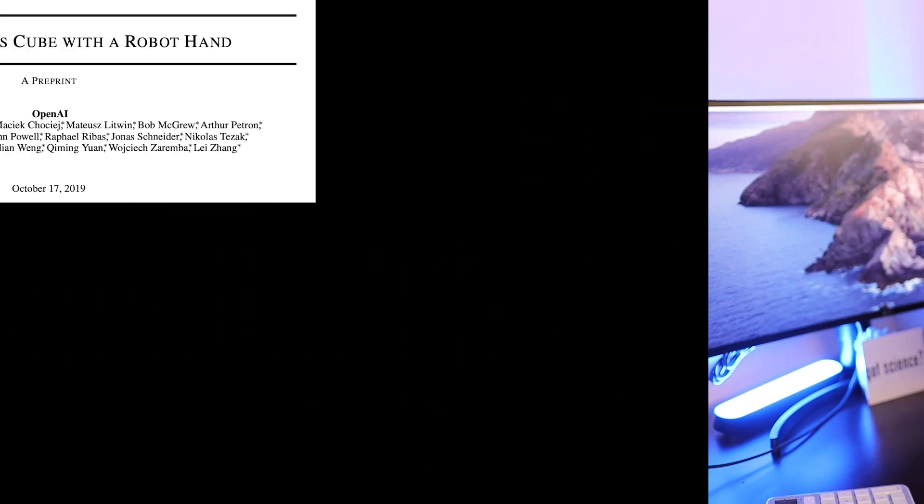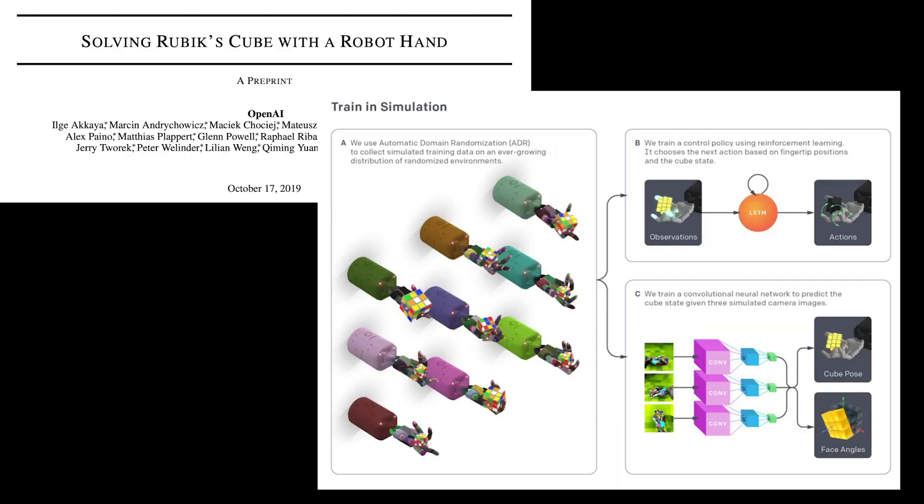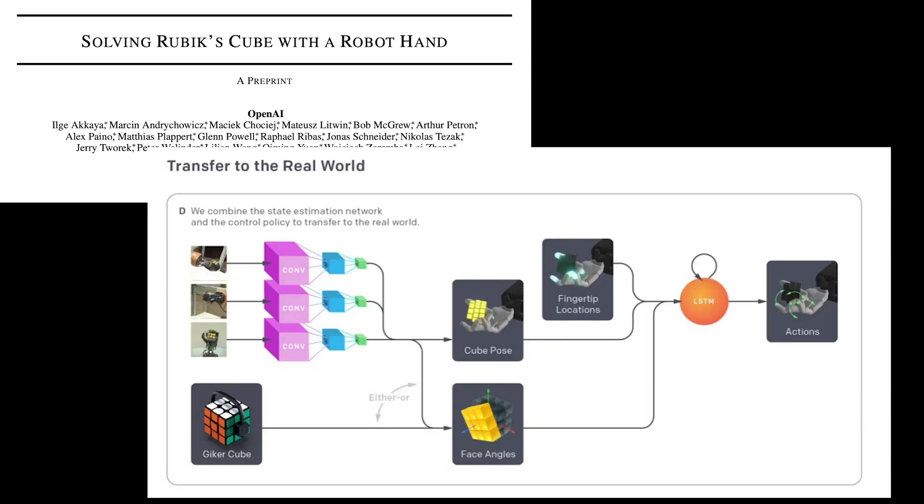However, it's important to remember that synthetic data is synthetic, and so models trained on it cannot immediately be translated into real-life use. One example of this is OpenAI's project on solving a Rubik's cube with a robot hand. The model was initially trained on simulations, succeeding about 90% of the time, and then translated to the real world where the success rate dropped to about 60% with a much wider variance. There's a non-trivial jump between training on synthetic data and using models in real life.